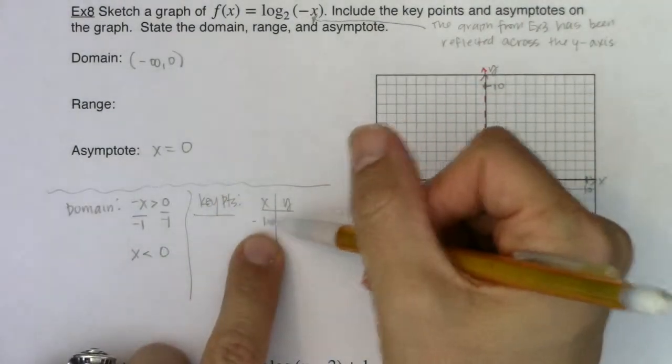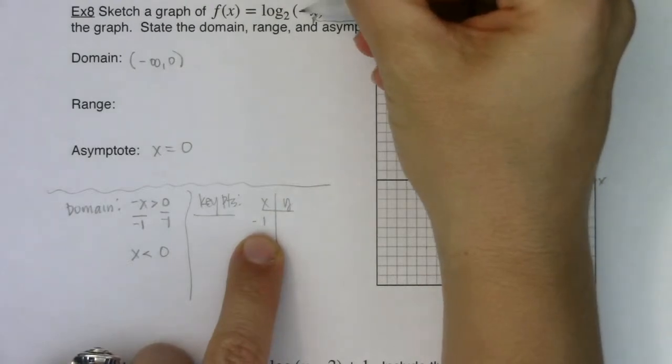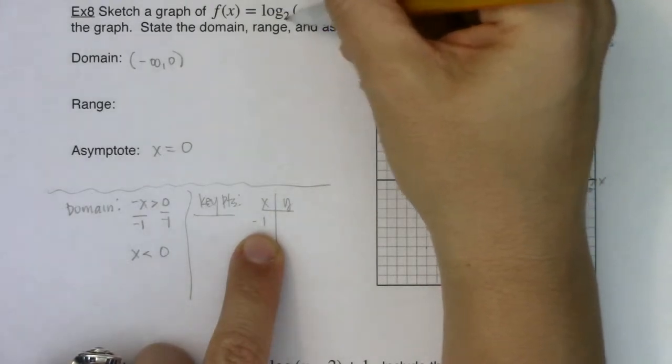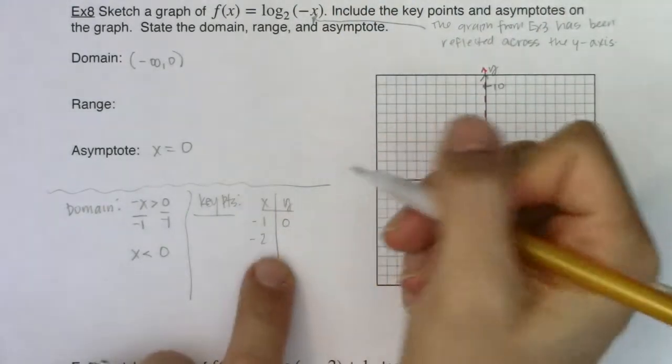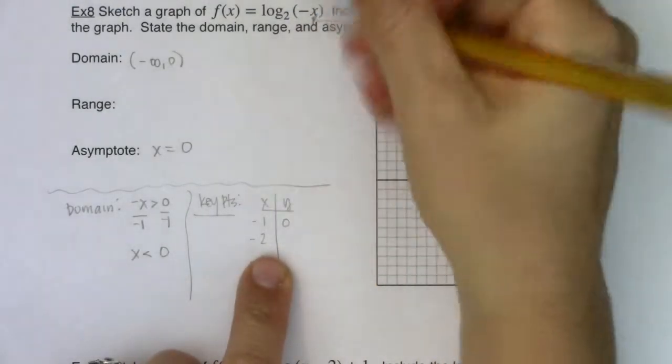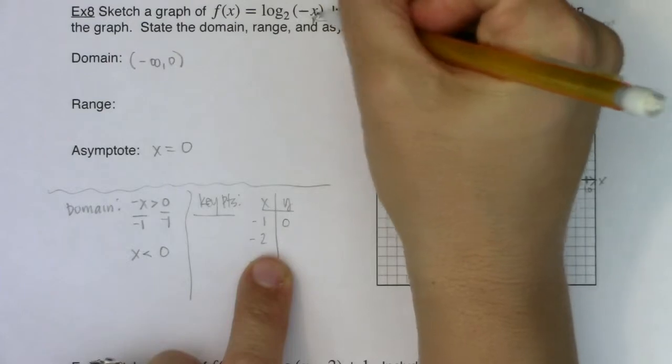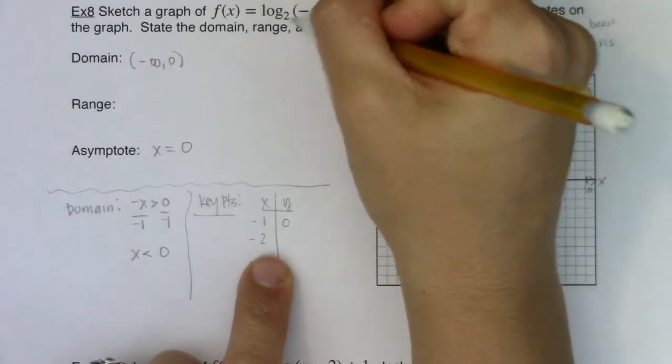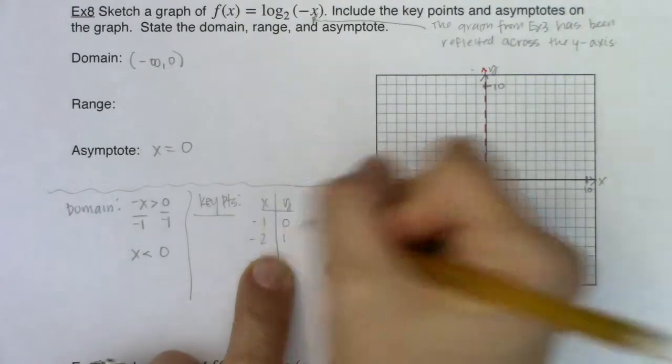So now let's try plugging in negative one. Well, a negative of negative one is positive one, and log base two of one is zero. All right, if I plug in negative two, the negative of negative two is positive two, and log base two of two is one.